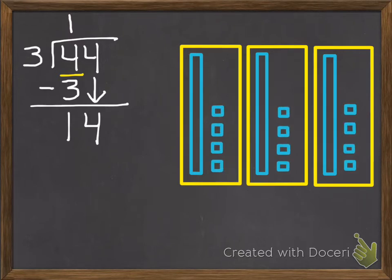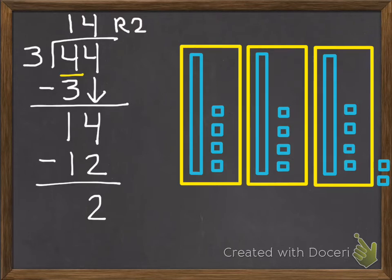So there's 4 threes in 14. So each group gets 4. So I'm going to put that above my ones place value because they each get 4 ones. So if I gave 3 groups 4 things, it means I passed out 12, which means I still have 2 of those ones left. So those are going to be my remainders off to the side. So each group has a ten, 4 ones, which makes 14 with 2 remainders. So my answer is 14 remainder 2.